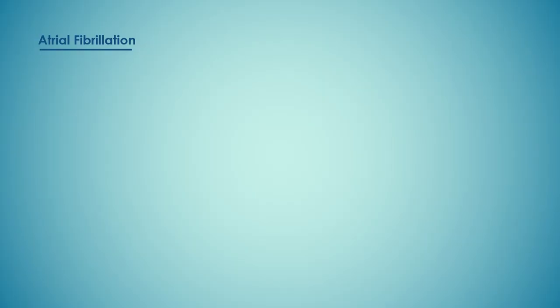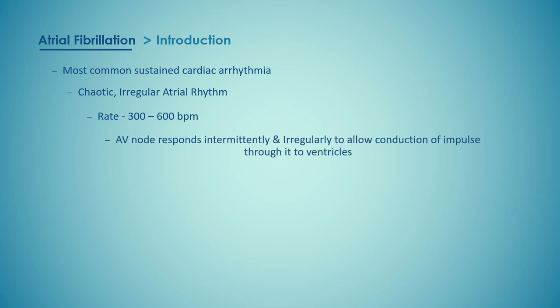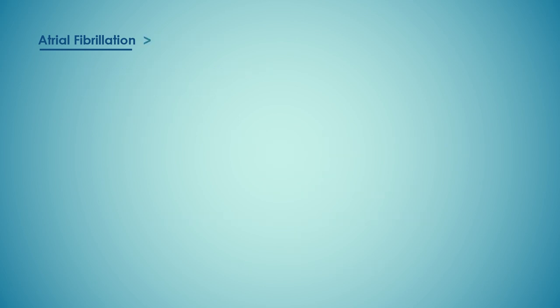Atrial fibrillation is the most common sustained cardiac arrhythmia. It is a chaotic irregular atrial rhythm at a rate of 300 to 600 beats per minute. The AV node responds intermittently to allow conduction of impulses through it to the ventricles, hence we observe an irregular pulse and irregular ventricular rhythm on ECG. During the last third of diastole, atria normally contract pushing further blood into the ventricles. In AF, due to the loss of this atrial contraction, cardiac output drops by 10 to 20 percent.